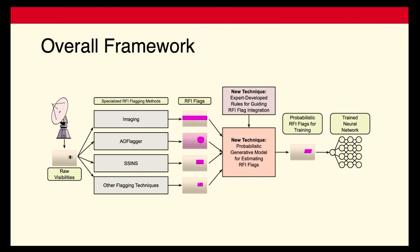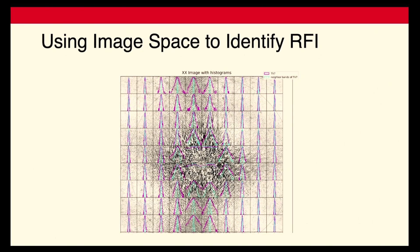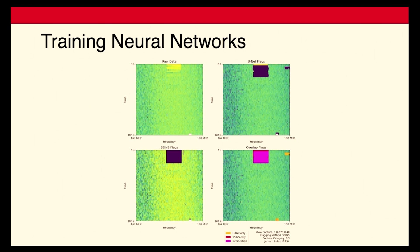Over the past year, we've made progress on both ends of this framework. With additional support from an SII graduate research supplement, we've developed a new method for near-field interferometry that can spot faint, nearby sources of RFI, like reflections off of airplanes. We've also been working on developing methods for spotting RFI in image space that is hard to spot in Fourier space. Finally, we've been working on training neural networks to detect RFI. Please come by our poster to learn more.